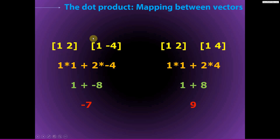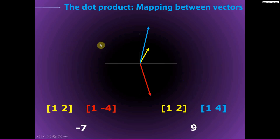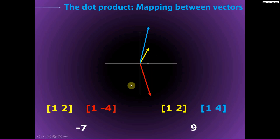These two-dimensional vectors can be represented as lines in two-dimensional space: the yellow vector, the red vector, and the blue vector. The geometric difference between the two pairs — yellow-to-blue versus yellow-to-red — is related to the angle. Yellow to blue is a very acute angle, so those vectors are very close and the dot product is positive. Yellow to red has an obtuse angle greater than 90 degrees, so those vectors point far apart and the dot product is negative. There is a direct relationship between the sign of the dot product and the angle between the two vectors.